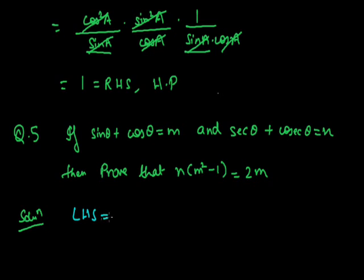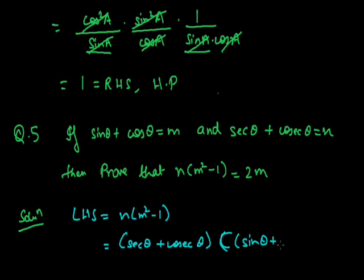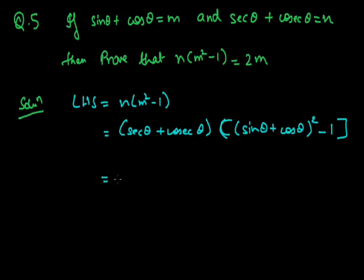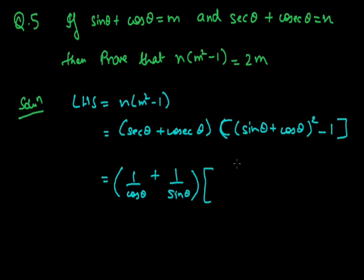Converting secθ + cosecθ into sin and cos gives (1/cosθ + 1/sinθ) = (sinθ + cosθ)/(sinθ · cosθ). Expanding (sinθ + cosθ)² - 1 = sin²θ + cos²θ + 2sinθcosθ - 1. Since sin²θ + cos²θ = 1, this simplifies to 2sinθcosθ.